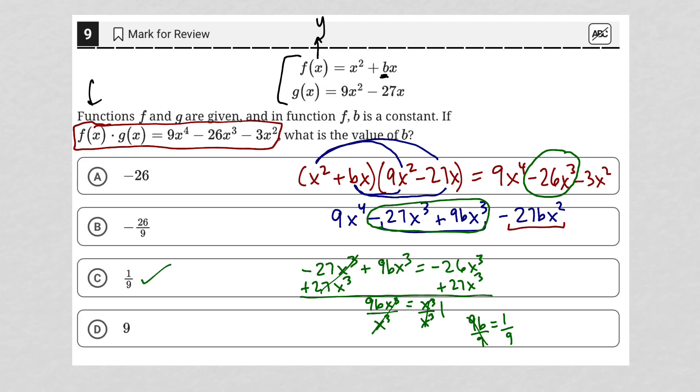So choice C is the correct answer. Alternatively, we could have said, well, if I have a negative 3x squared here as my last term, but I have a negative 27bx squared here as my last term, I can set those two things equal to each other.